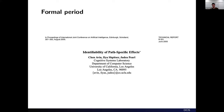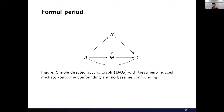These natural direct effects were particularly interesting because they decomposed total effects at the individual level and clarified identification assumptions needed to identify these parameters from observed data. A really important development came in 2005 with a paper by Avin, Shpitser, and Pearl, who showed that in many common settings a key assumption needed to non-parametrically identify the natural direct effects is contradicted by common graphical structures — specifically, the presence of a mediator-outcome confounder that is a descendant of the treatment, termed a 'recanting witness.' The natural direct effect is not non-parametrically identified when this graphical structure is present.